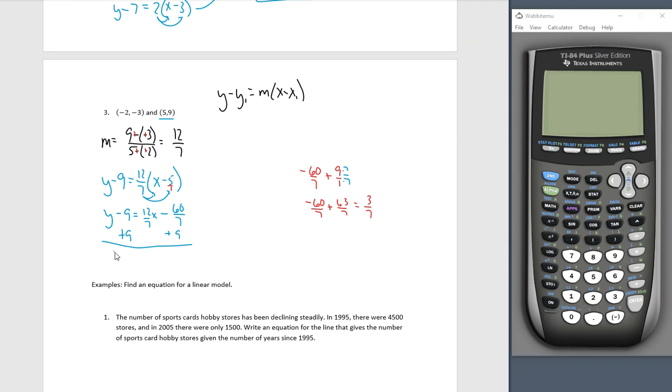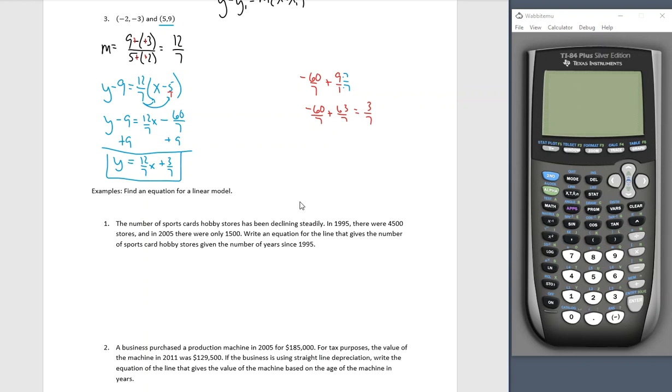So I multiply both the numerator and denominator of 9 over 1 times 7. I'll have negative 60 sevenths plus 63 sevenths. And now that the denominators are the same, I can add the numerators 3 sevenths. So back over here on my left side column, back to my actual work. I have my equation of the line and I can always check to make sure my negative 2, negative 3 is on there. But I gotta be honest, I'd rather trust us.